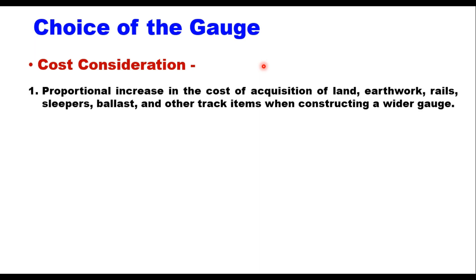Now how do we select a gauge? What are the factors which influence the choice of gauge for a country or an area? The first is cost consideration — there is a proportional increase in the cost of acquisition of land, earthwork, rails, sleepers, ballast, and other track items when constructing a wider gauge.